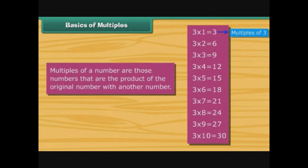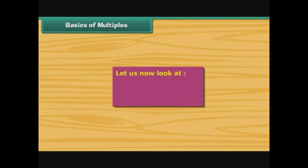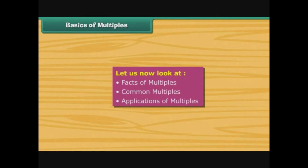Hence they are all multiples of three. Multiples of a number are those numbers that are the product of the original number with another number. In order to understand multiples better, let us now look at facts of multiples, common multiples, and applications of multiples.